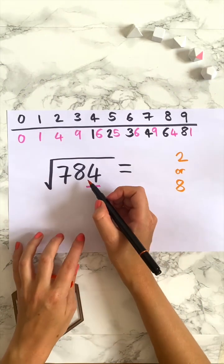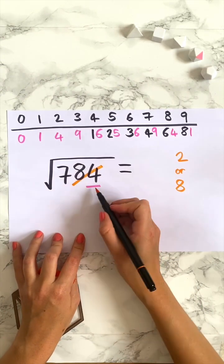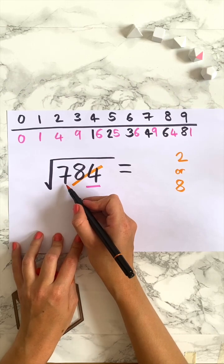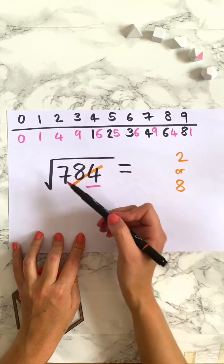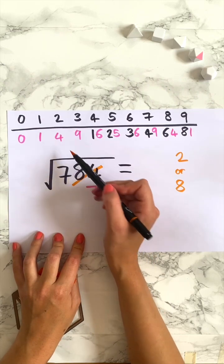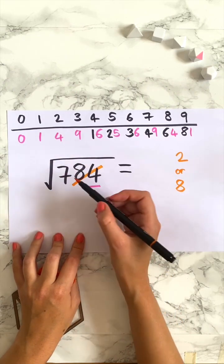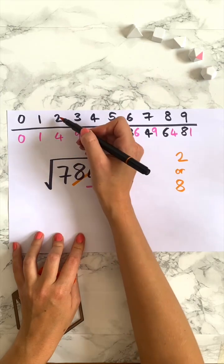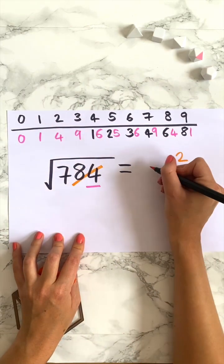Then what you're going to do is cross off the last two digits, in this case the 84, so we're just left with a 7. Now we want to find the square number that is closest to 7 but is less than 7. So in this case 4 is the closest number to 7 that is smaller than 7. 4 corresponds to 2, so we're going to write down 2 here.